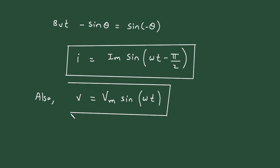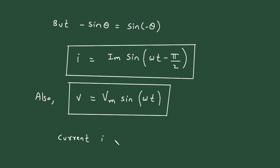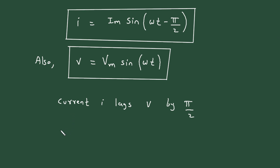Here we can see the phase of current is (ωt minus π/2) and the phase of voltage is ωt. That means voltage will grow first and then the current will grow. Therefore, current I lags V by π/2, or voltage V leads current I by π/2.